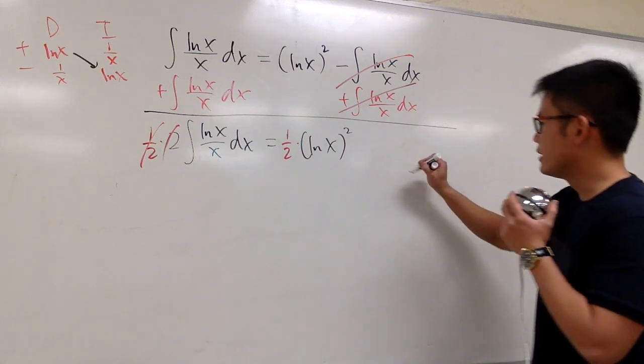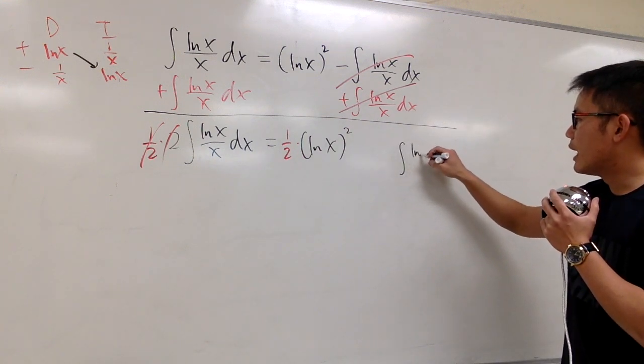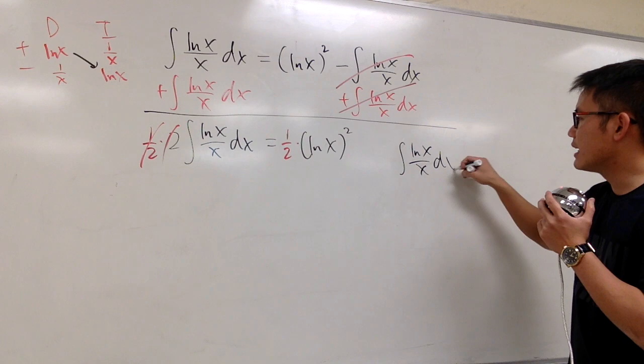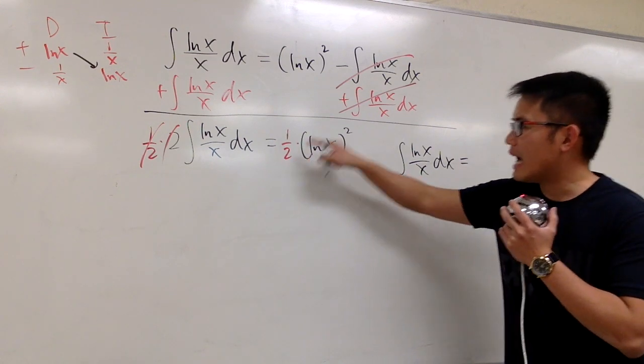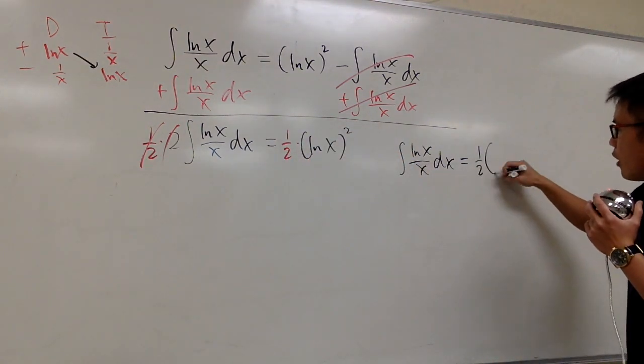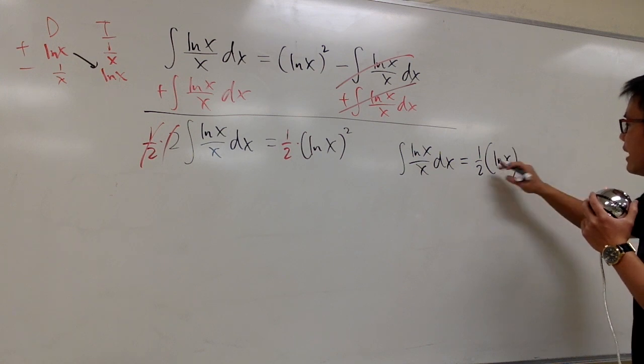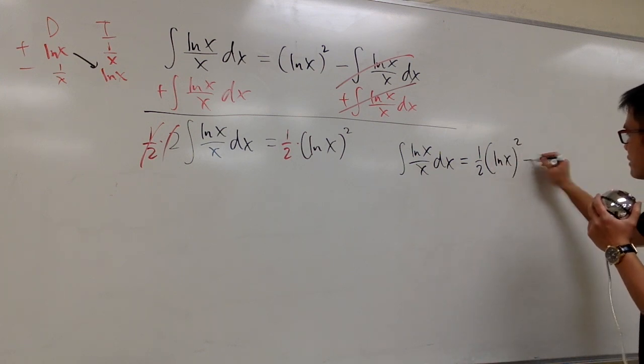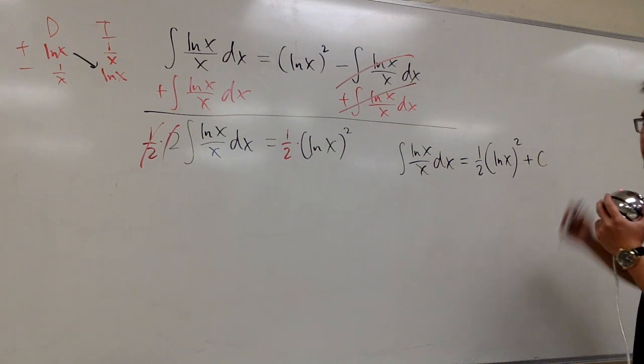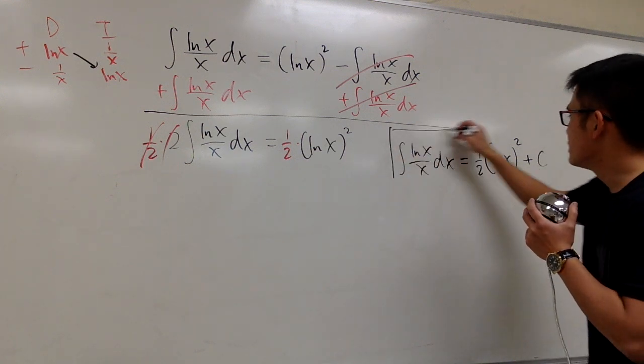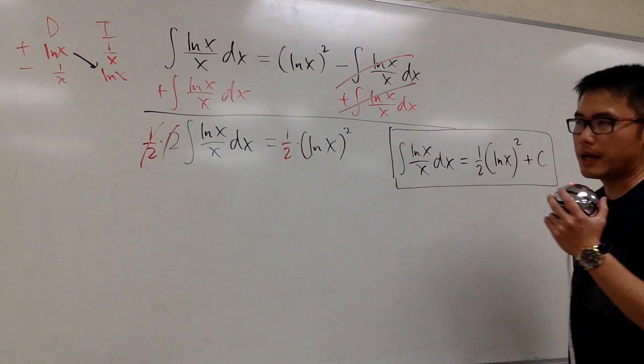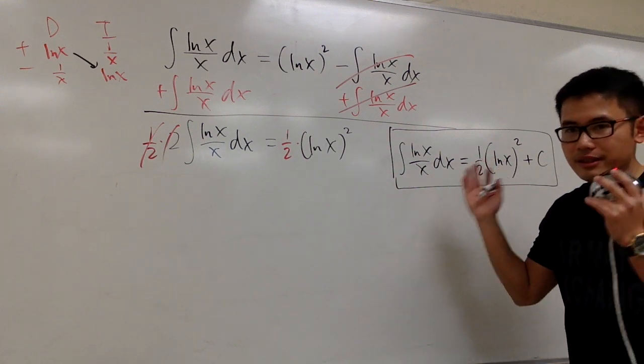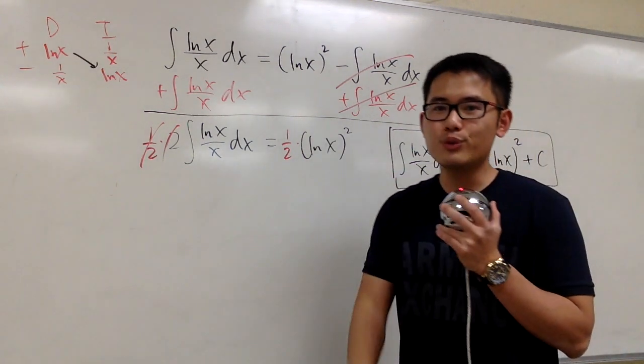Integral ln x over x dx, this will be 1 half of ln x, and then raised to a second power. This is the function part of the answer. We are done, and at the end we'll put a plus C. This is it. And this used integration by parts. We can also do it with another way.